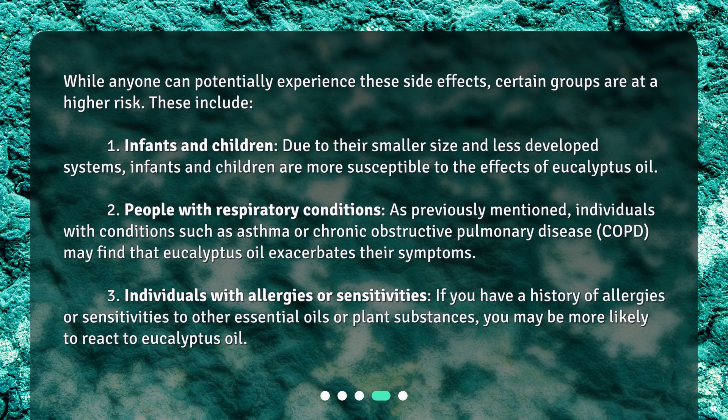Who is at risk? While anyone can potentially experience these side effects, certain groups are at a higher risk. These include: 1. Infants and children — due to their smaller size and less developed systems, infants and children are more susceptible to the effects of eucalyptus oil. 2. People with respiratory conditions — individuals with conditions such as asthma or chronic obstructive pulmonary disease (COPD) may find that eucalyptus oil exacerbates their symptoms.